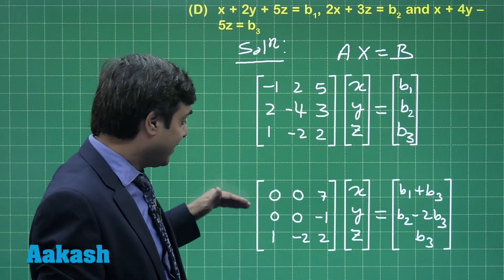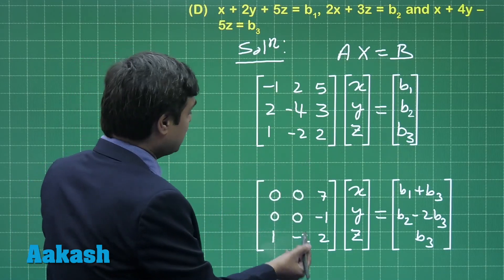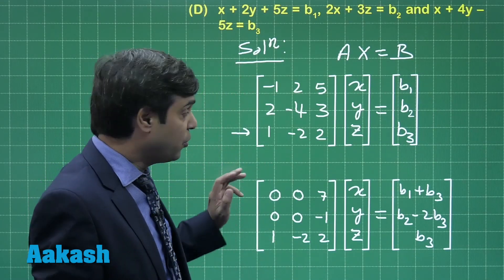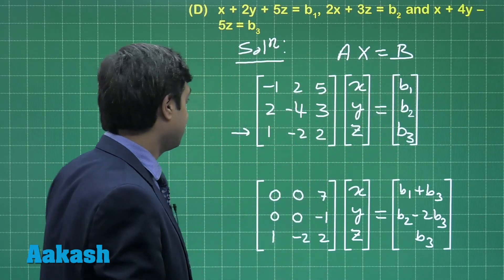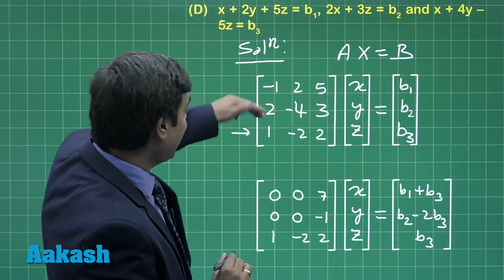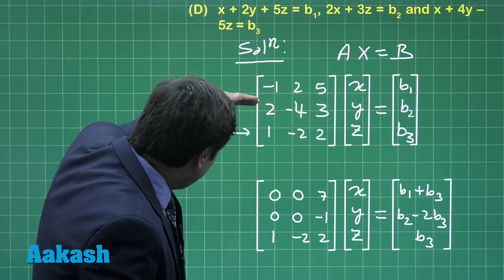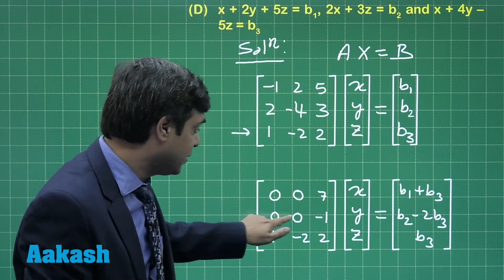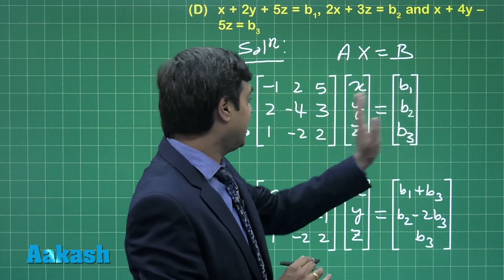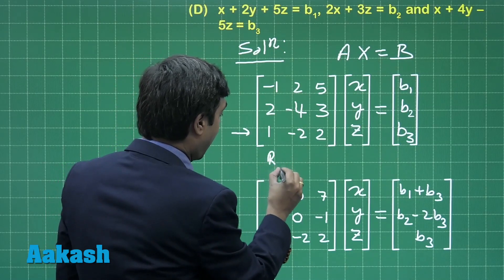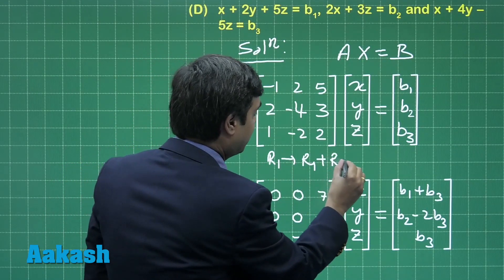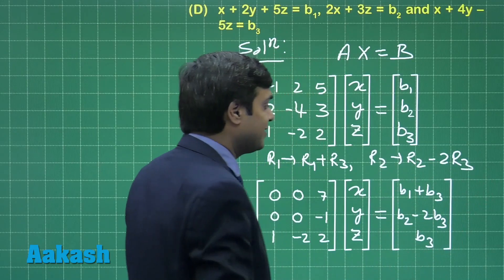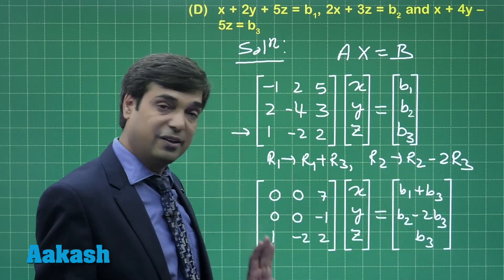Simplifying to get maximum zeros in a row, we use operations on the third row to make elements in rows one and two zero. Replacing R1 by R1 plus R3 and R2 by R2 minus 2R3, we find 0 0 7 in the second row and 0 0 minus 1 in the third row, applying the same operations on the right-hand side as well.